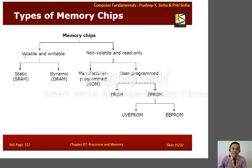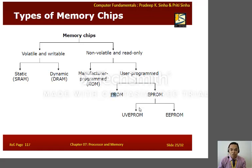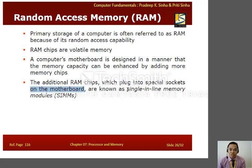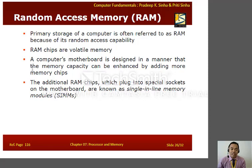There are types of memory chips. For volatile and writable memory, there are two types: static RAM, or SRAM, and dynamic RAM. For non-volatile, read-only memory, we have ROM and user-programmable ROM; under user-programmable ROM we have PROM and EPROM. Random access memory, or RAM, is the primary storage of a computer, often referred to as RAM because of its random access capability. RAM chips are volatile memory. Additional RAM chips can be plugged into special sockets on the motherboard, known as single inline memory modules, or SIMMs. Computers are designed so that memory capacity can be enhanced by adding more memory chips.